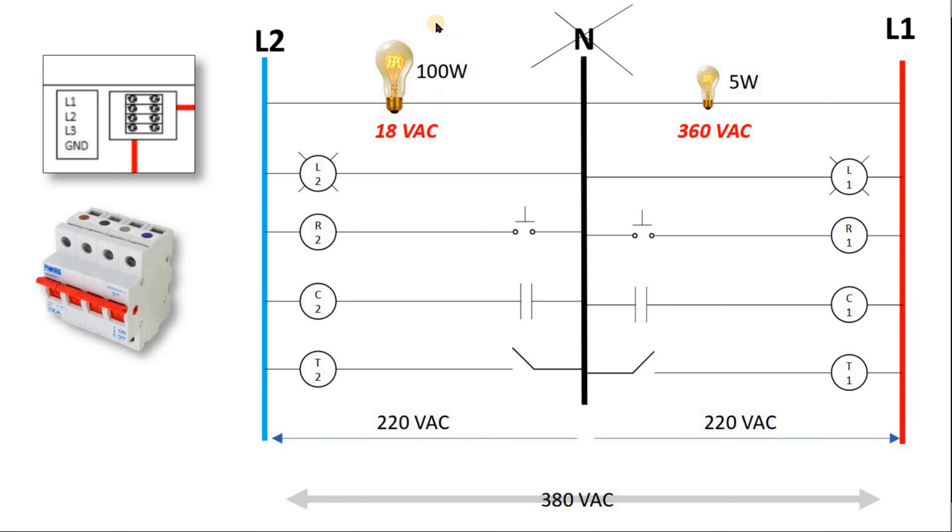So in fact, based on the resistance, you will find about 360 volts AC on the 5 watts and you have 18 volts AC on the 100 watts. Of course, this is just a very quick rough estimation.